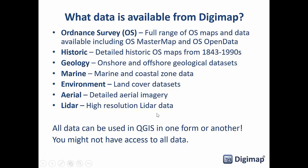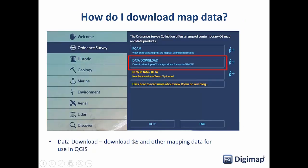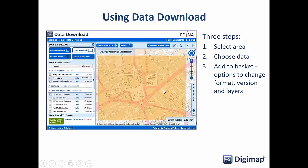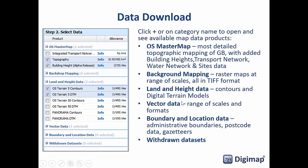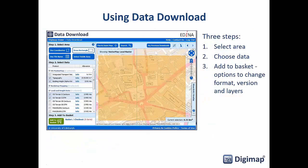The LiDAR collection comes free with the aerial collection, so if you're subscribed to aerial Digimap you'll get access to the LiDAR data too. Each collection has a data download facility — this is where you go to get the data you're going to be using in QGIS. It's a simple three-step process: go into the data download facility, select your area, choose the products from the left-hand side, then add them to your basket.